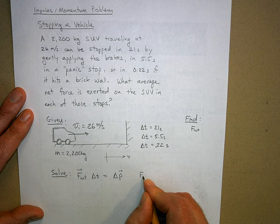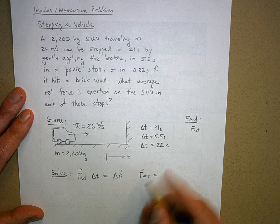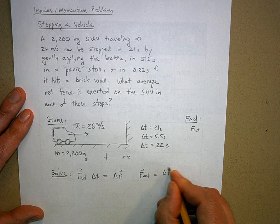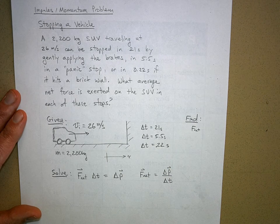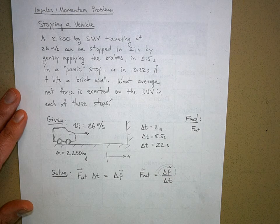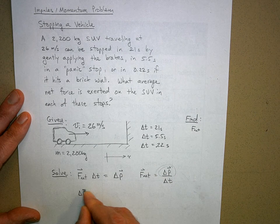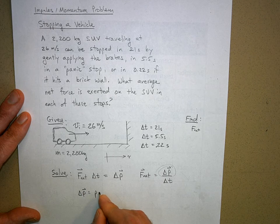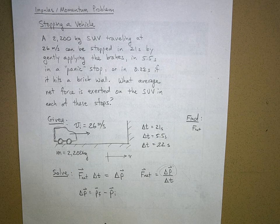So the net force, or the average net force applied to an object, is its change in momentum over the change in time. Let's figure out what the change in momentum of this object is first. Delta p equals p final minus p initial, right? The final momentum minus the initial momentum.